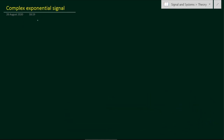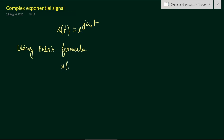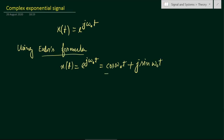A complex exponential signal is denoted by x(t) = e^(jω₀t). Using Euler's formula, we can write x(t) = e^(jω₀t) = cos(ω₀t) + j·sin(ω₀t).